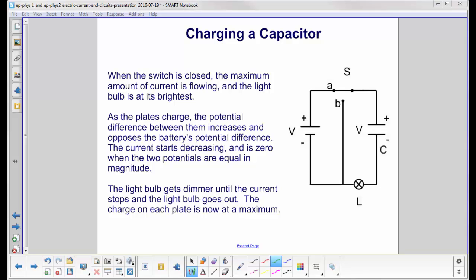When the switch is closed, the maximum amount of current is flowing, and the light bulb will be at its brightest. That's because there is no potential difference at the capacitor, so it is not opposing this potential. As the plates charge, the potential difference increases, and as you can see, it opposes the potential difference from the battery.